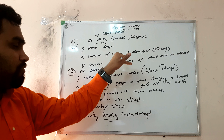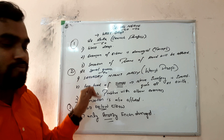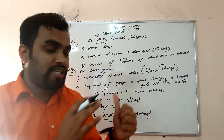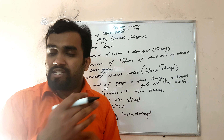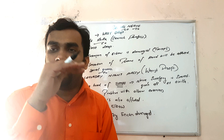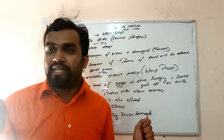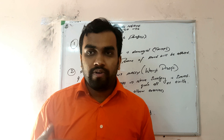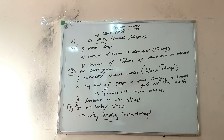To summarize: at the axilla it is the main damage, known as crutch paralysis — wrist drop, extension of elbow affected, and sensation affected. At the spiral groove it is Saturday night palsy — wrist drop and sensation affected, but elbow extension is spared. At or below the level of the elbow joint, only sensation will be affected. That is all about radial nerve damage.